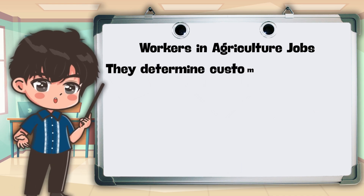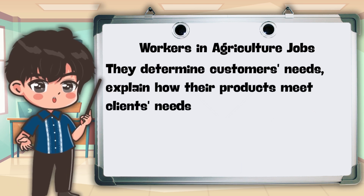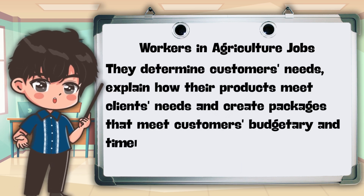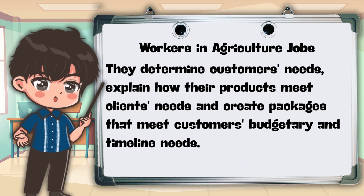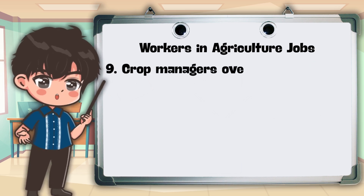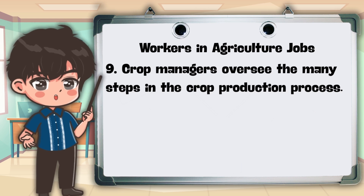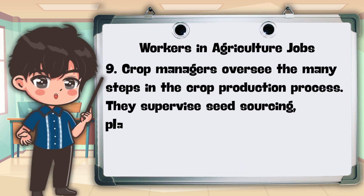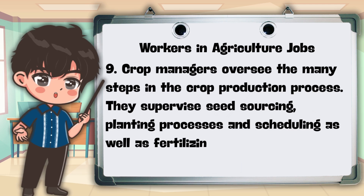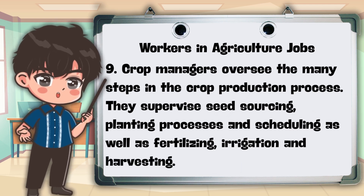Sales representatives determine customers' needs, explain how their products meet clients' needs, and create packages that meet customers' budgetary and timeline needs. 9. Crop managers oversee the many steps in the crop production process. They supervise seed sourcing, planting processes and scheduling, as well as fertilizing, irrigation, and harvesting.